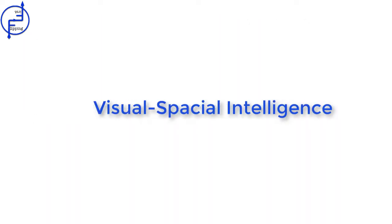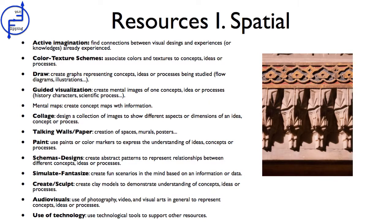Spatial intelligence — how to work with it. To stimulate spatial intelligence we can use the following resources: active imagination, to find connections between visual designs and experiences or knowledge; color textures and schemes, associating colors and textures with concepts, ideas or processes; drawing and creating graphs representing concepts, ideas or processes being studied; flow diagrams and illustrations; guided visualization, creating mental images of concepts, ideas or processes, history characters, or scientific processes; mental maps, creating concept maps with information; and collage, designing a collection of images to show different aspects or dimensions of an idea, concept or process.